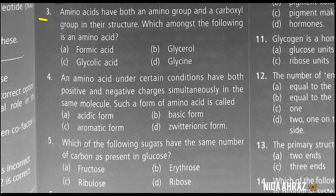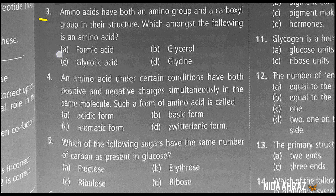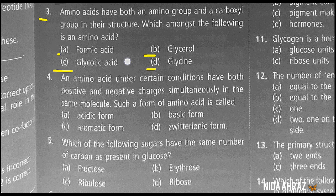Amino acids have both an amino group and a carboxyl group in their structure. Which amongst the following is an amino acid? Formic acid, glycerol, glycolic acid, or glycine. The correct choice is option D — glycine.